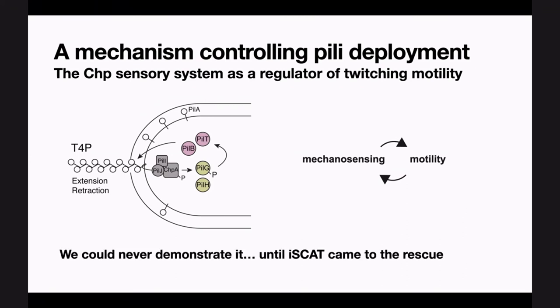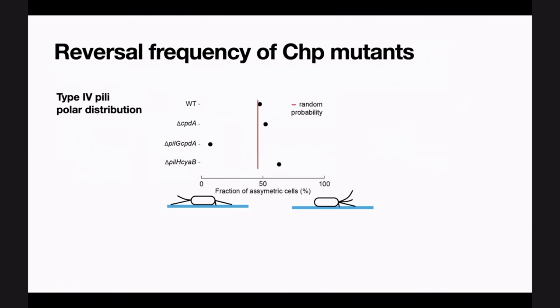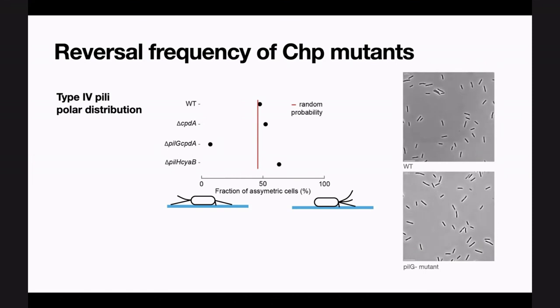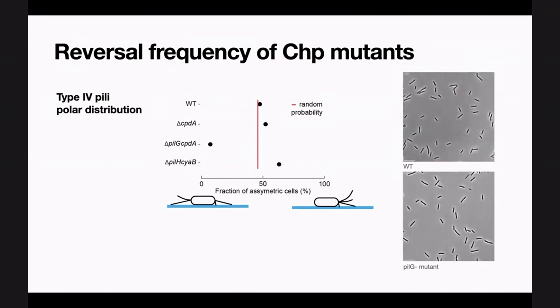We could never demonstrate this before we had iSCAT because we couldn't see pili without disrupting them. With iSCAT, we could measure the asymmetry of different mutants in pili distribution — whether cells tend to have pili on both poles or only one pole. Some mutants have more symmetric pili distributions, others more asymmetric. We demonstrated that this mechanosensory system regulates where pili go inside the cells — their polarity — and ultimately where cells go. Wild-type cells go in straight directions, while some mutants go back and forth because their pili are symmetrically distributed.